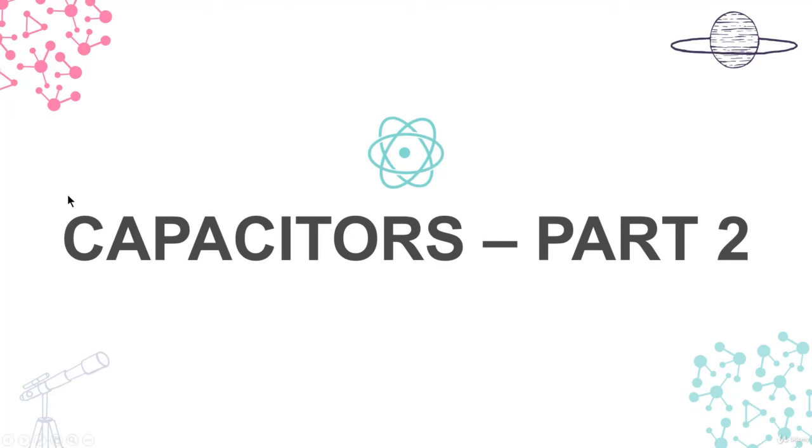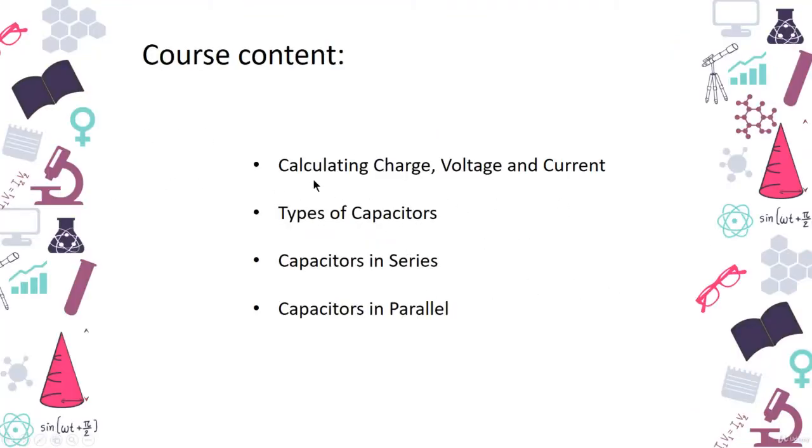This is the second part of capacitor introductory where we will learn about how to calculate the charge, voltage and current. Then we will talk about the types of capacitors where we already know that there are electrolytic caps and non-electrolytic ones, and we will see how to calculate the total capacitance when capacitors are placed either in series or parallel.